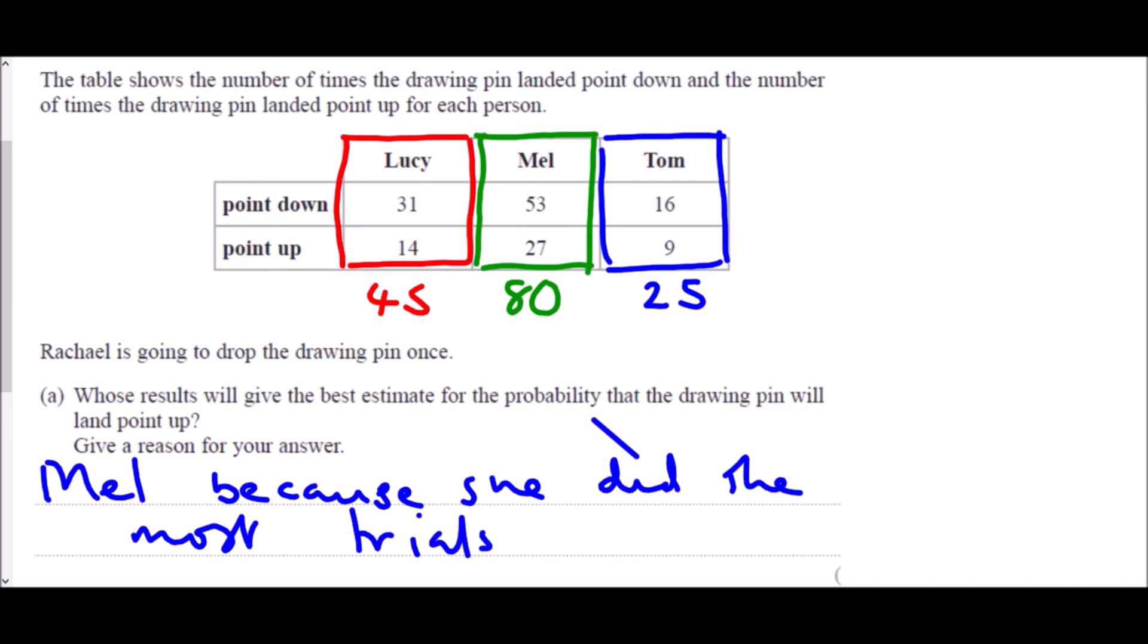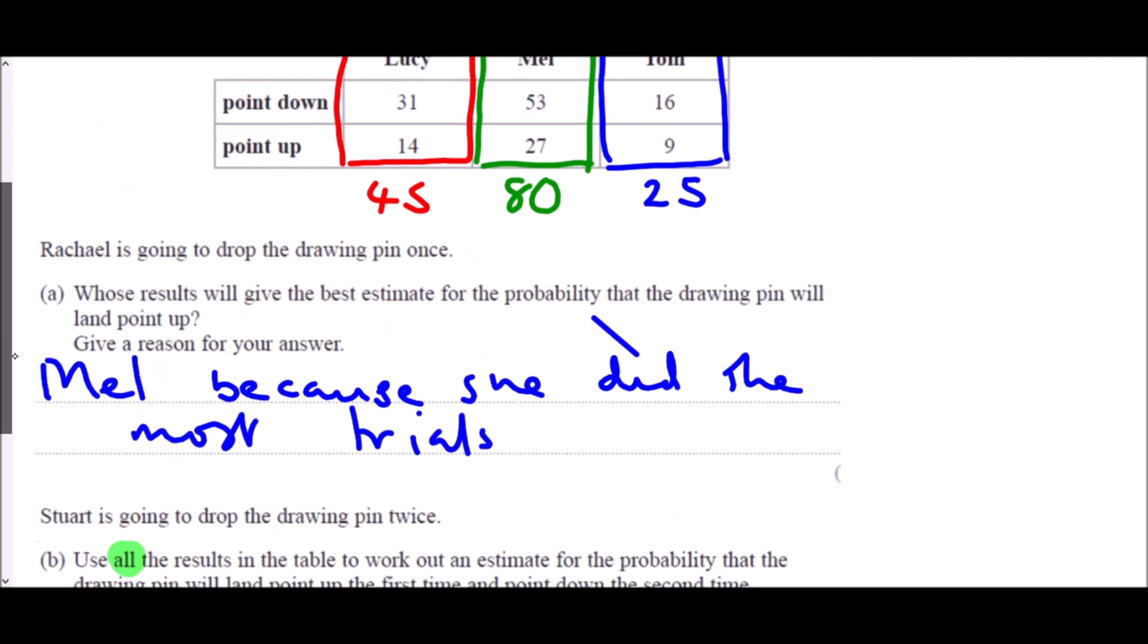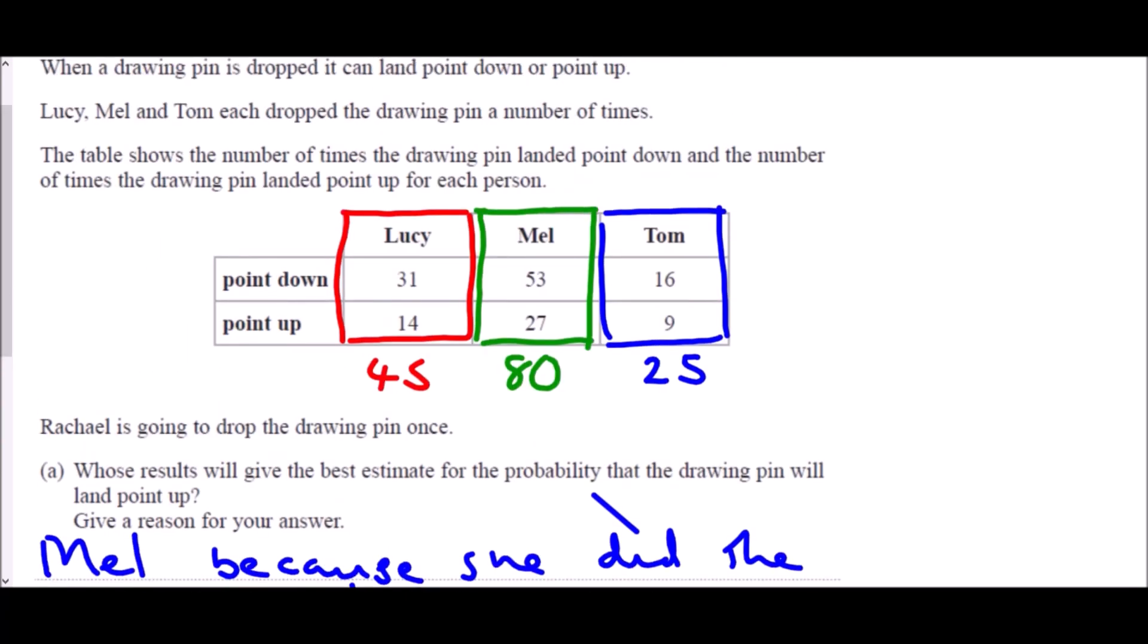In part B, it tells us that Stuart is going to drop the drawing pin twice. We need to use all the results in the table to work out an estimate for the probability that the drawing pin will land point up the first time and point down the second time. Now it's very important here - they use the word all the results. And what that is suggesting is that actually the best estimate we could get of each of the probabilities would be to put everyone's work together.